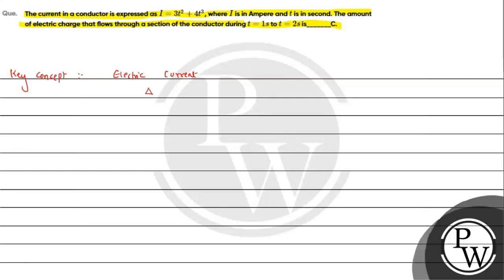When we talk about the average value, it is given by the expression i_average equals ΔQ by Δt. And this is the instantaneous value, that is the first derivative form, so i_instantaneous can be written as dQ by dt, limit Δt tends to 0. This is the instantaneous value.